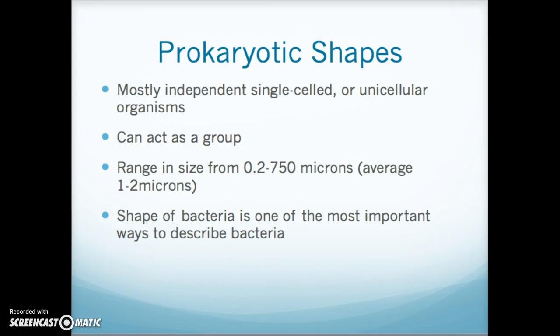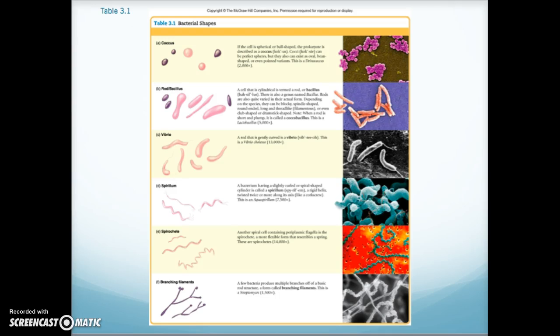The last part I want to talk about is how we describe prokaryotes or bacteria. Since most of them are independent single-celled or unicellular organisms, we describe the morphology of an individual cell. They can also act as a group, and in a group they will have a morphology as well. Their size ranges from 0.2 to 750 microns — they are very small — and shape is one of the most important ways to describe them.